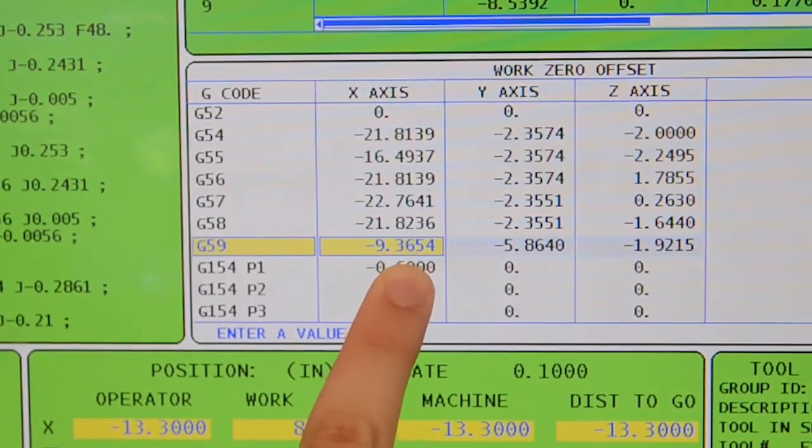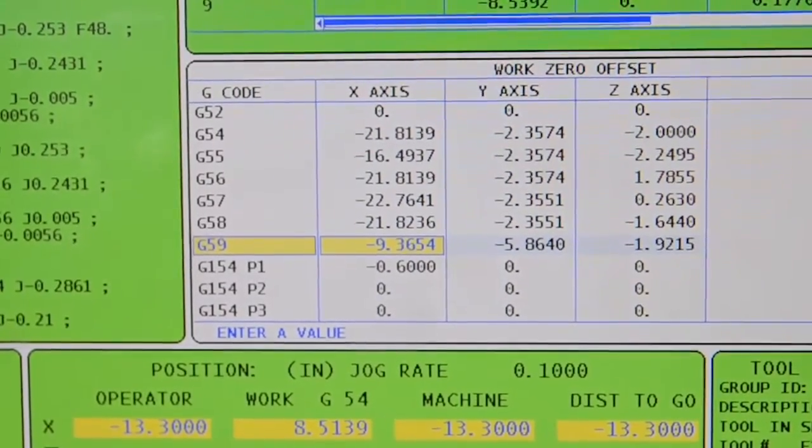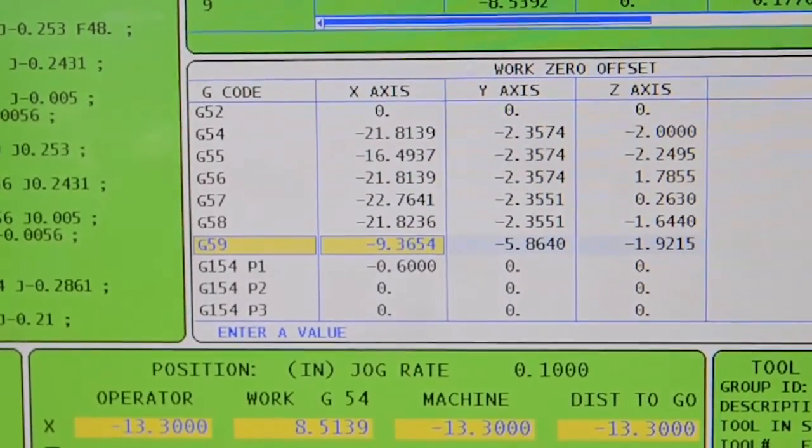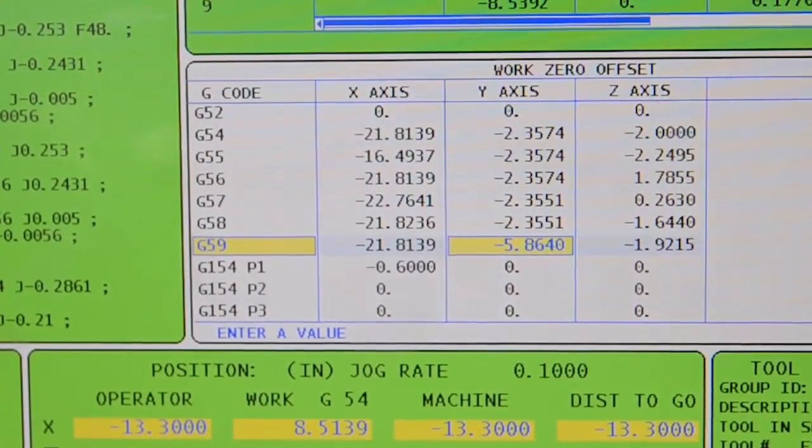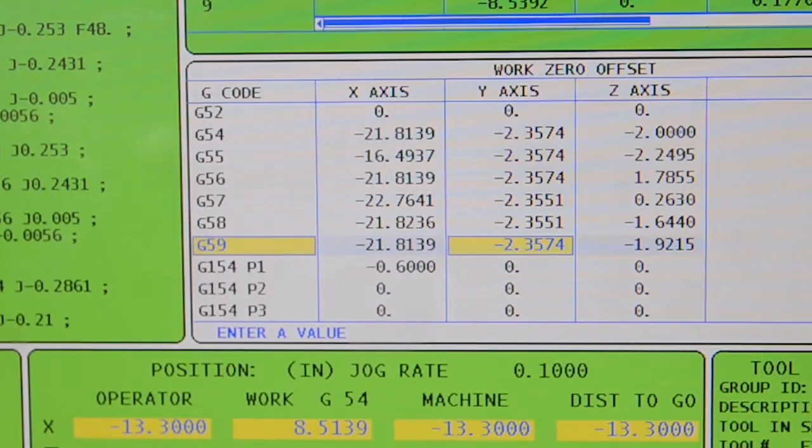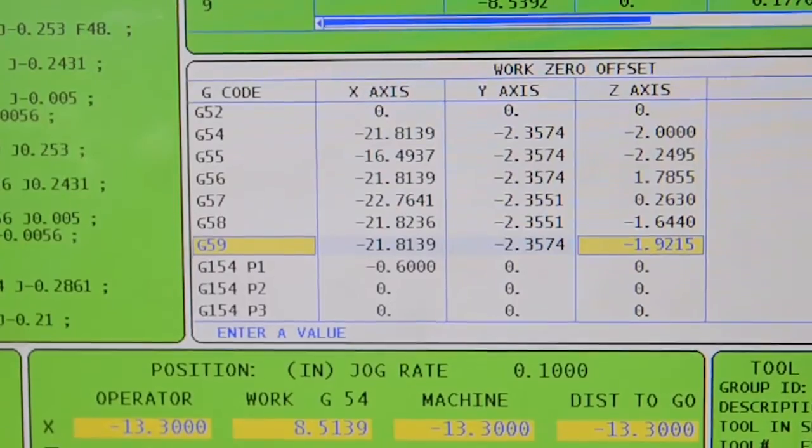Let's replace our x-axis value, negative 21.8139 F1. Now we'll toggle over to the y-axis, negative 2.3574 F1 and then the z-axis, negative 2.0 F1.